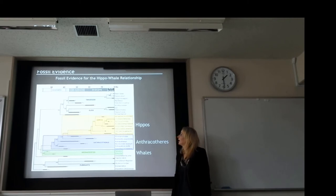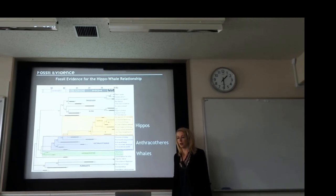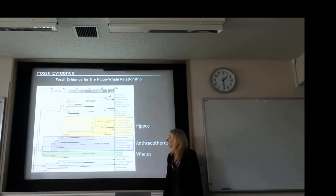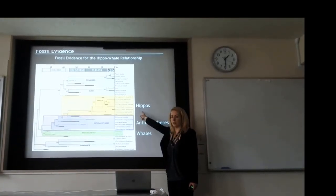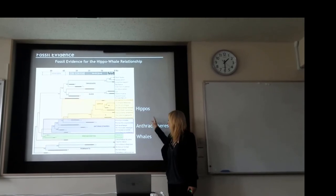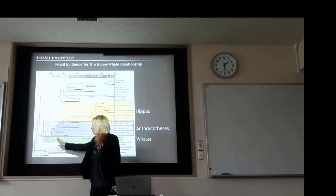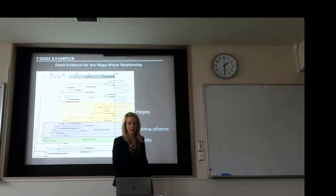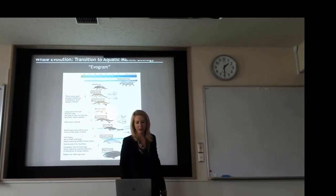Now we're looking at the fossil evidence for the connection between hippos and whales. We're looking at osteological evidence — actual skeletal material. These are the Anthracotheres, the extinct relatives of the hippos. Hippos plus Anthracotheres are then the sister group to whales. This is confirmed by the actual skeletal material — that's the fossil evidence that there is a genuine connection between hippos and whales.